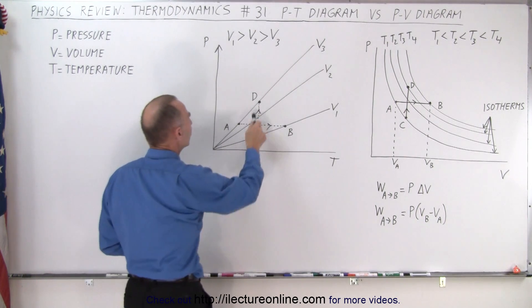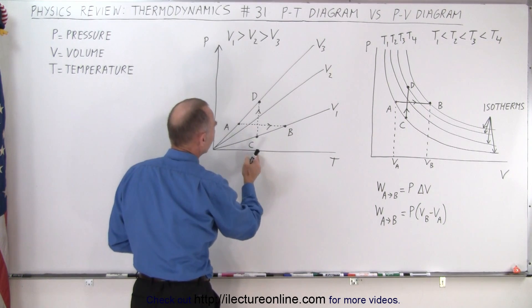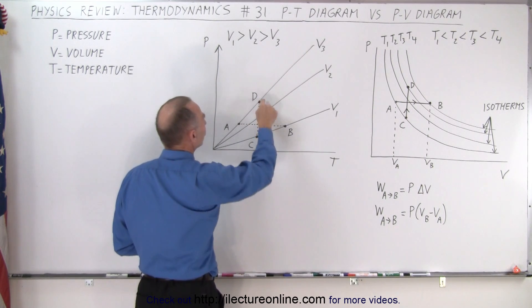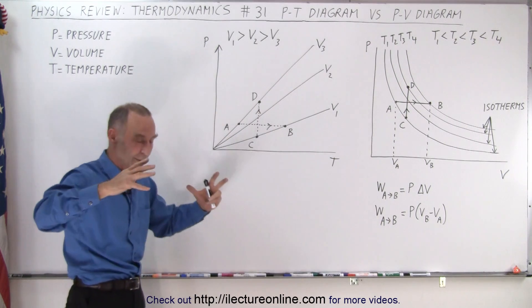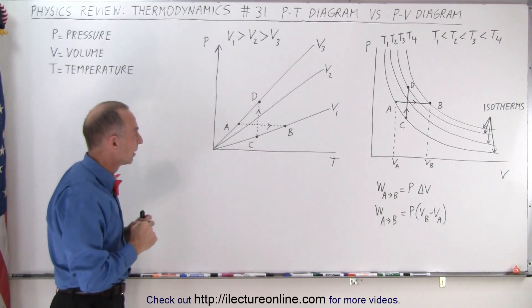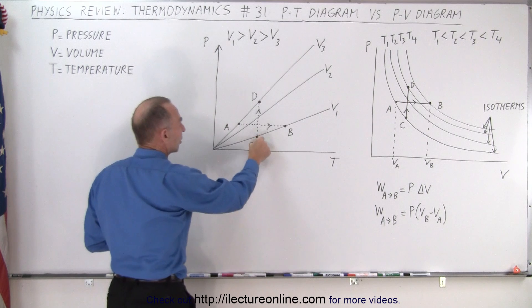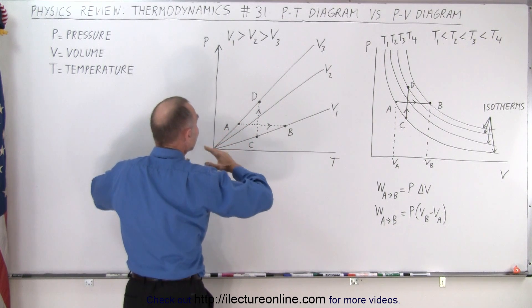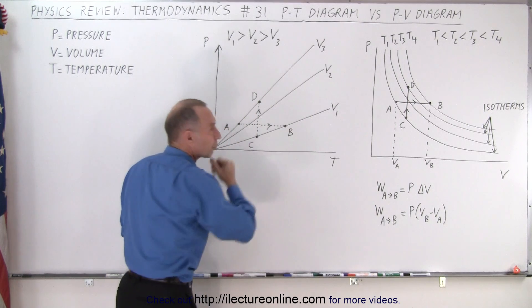How about going from C to D? Now here we keep the temperature the same, but we increase the pressure, and we go from a larger volume to a smaller volume. So that makes sense. When we compress the gas, we will go from a larger volume to a smaller volume. We increase the pressure, but the temperature remains the same.